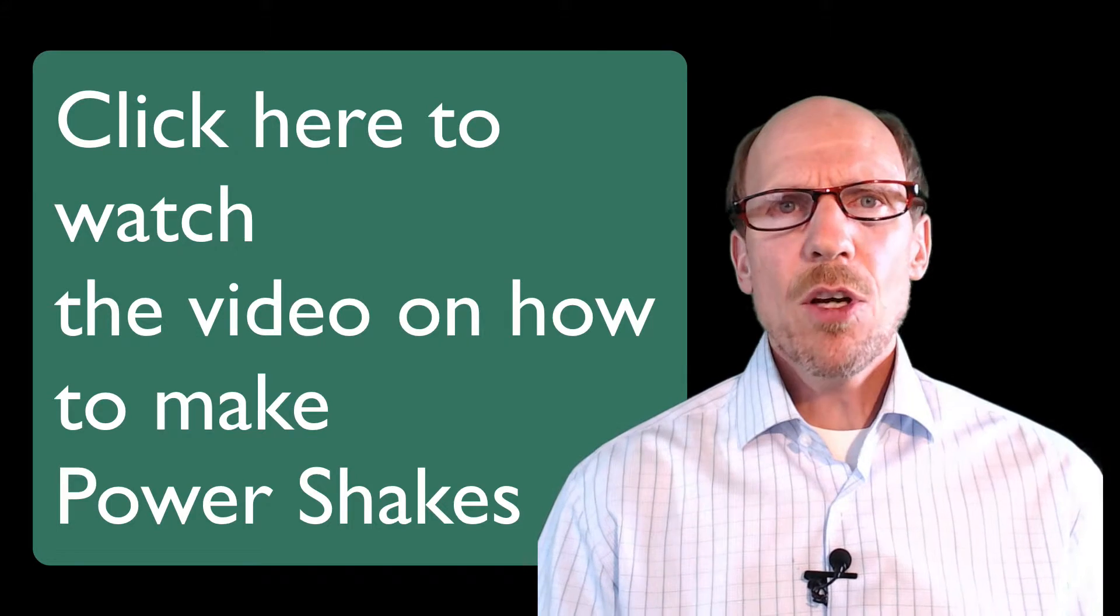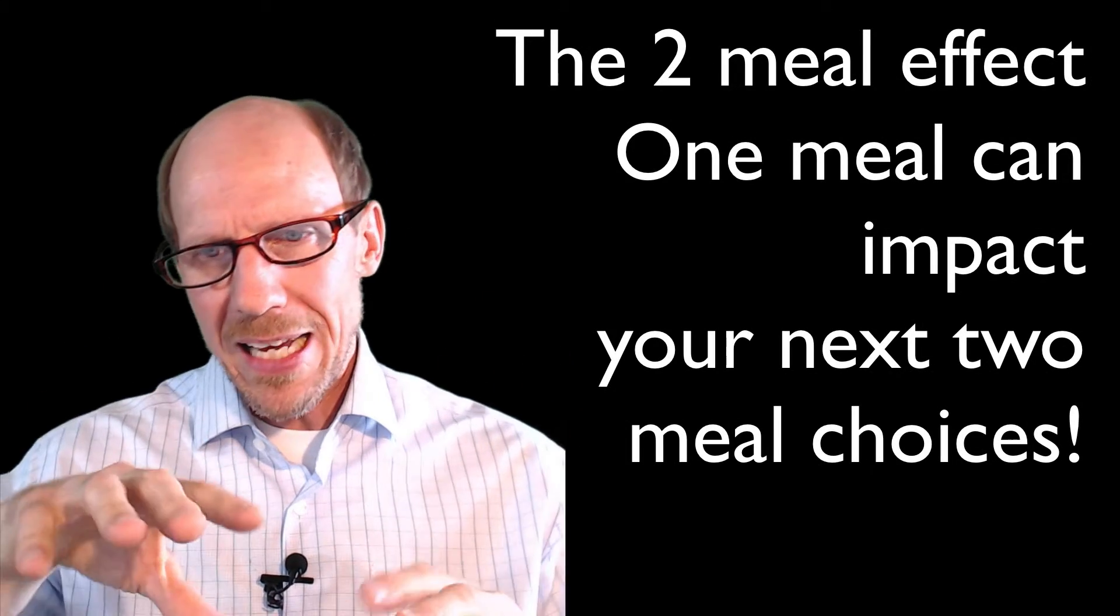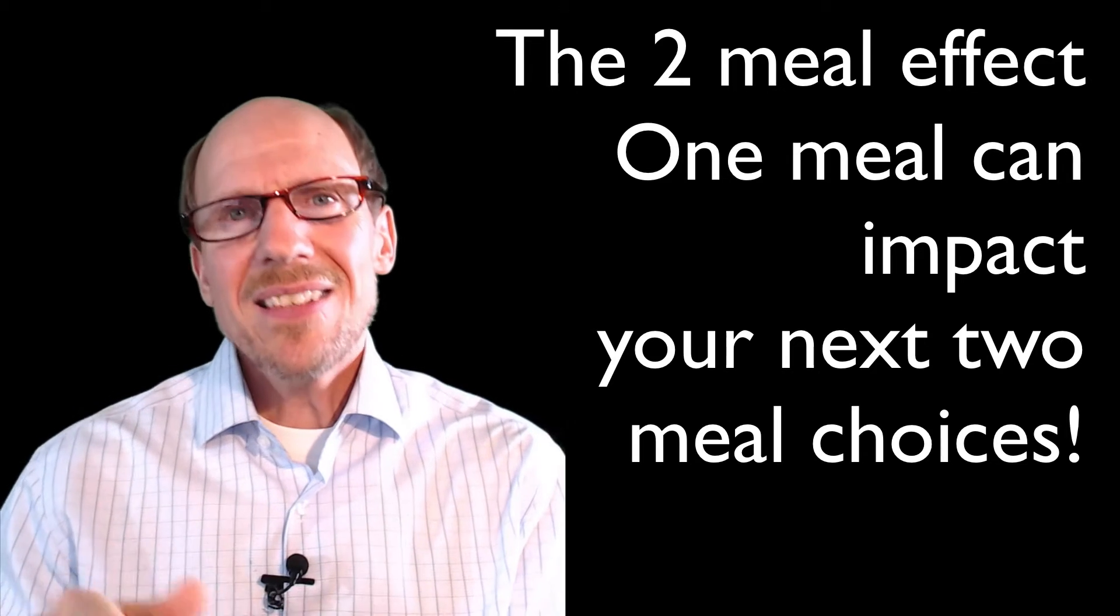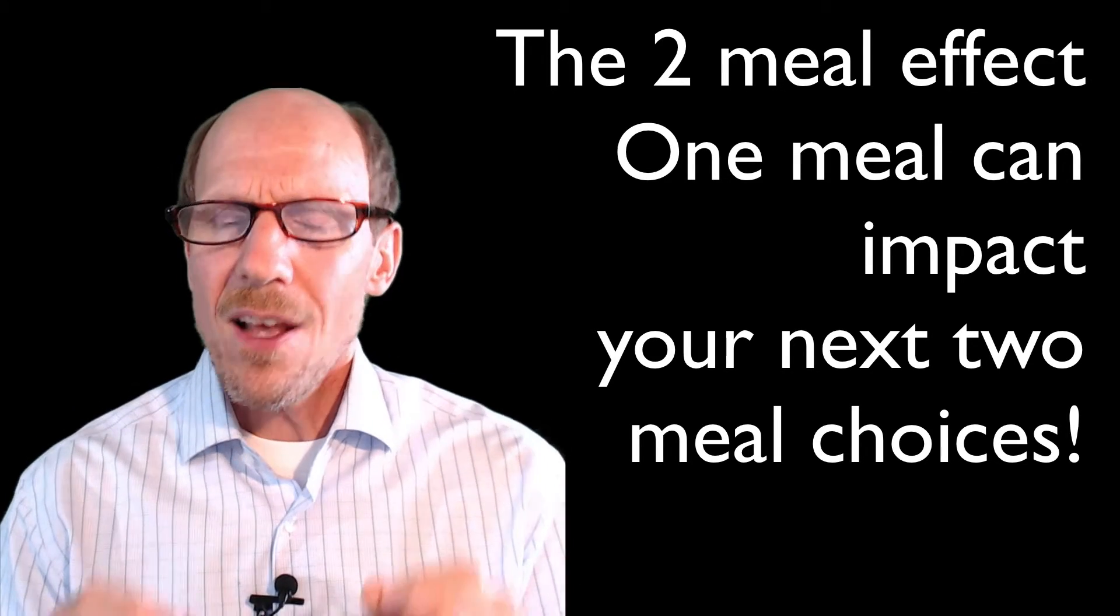When you start eating like this, there's something called the two-meal effect. You've heard that breakfast is the most important meal of the day. When you have a good, healthy breakfast with protein, carbs, fats, phytonutrients, and fibers, that stabilizes your blood sugar. But it also alters your biochemistry and neurology. So the next time you go to eat, you tend to make better food choices. This is really paramount because if you have a poor, low-quality breakfast with high glycemic index and artificial sweeteners, the next time you go to eat, your brain chemistry's changed. You make different decisions. You don't even realize it. This happens not just for the next meal, but the meal after that. We call this the two-meal effect.